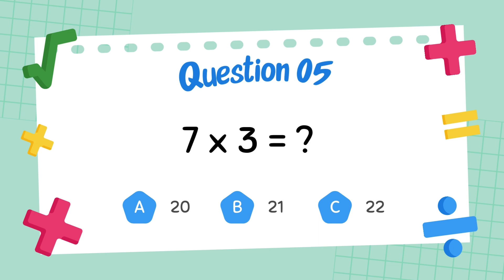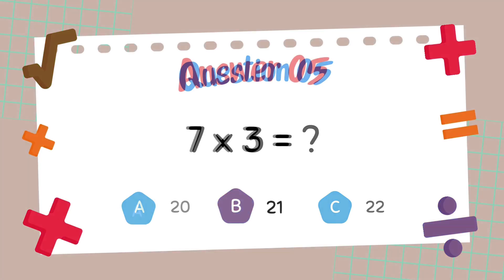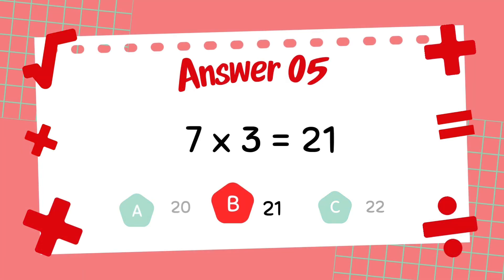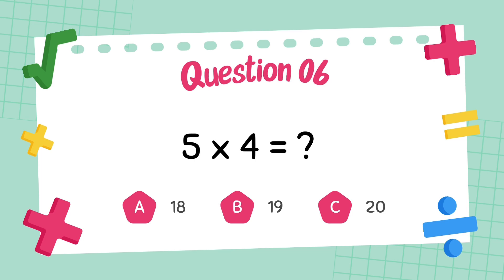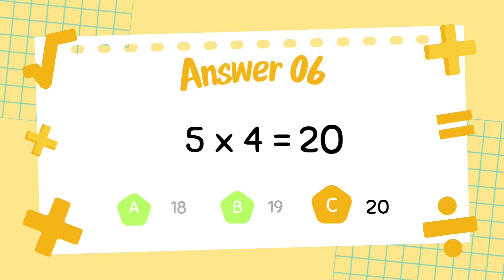What is 7 multiply 3? The answer is 21. What is 5 multiply 4? The answer is 20.